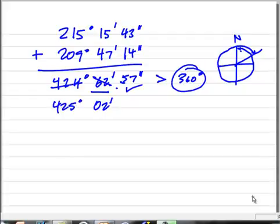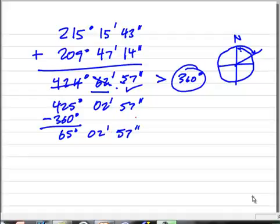That gives me 425 degrees, 02 minutes, and 57 seconds. But you can still see that I'm greater than 360. So I'm simply subtracting 360 degrees and I get 65 degrees, 02 minutes, and 57 seconds. That would be the final answer for this addition.